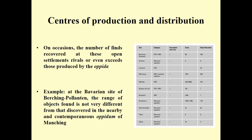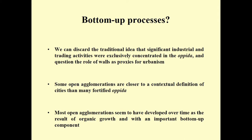If we compare open agglomerations and fortified Opida, we see that on occasions the number of finds recovered at the open settlement even exceeds the finds from some prominent Opida. This is shown in a table published by Vladimir Salaj. The range of activities happening at these sites are often very similar — for example, comparing Berching-Pollanten and the nearby Oppidum of Manching. Several scholars, and I support this idea, have emphasized that we need to discard the traditional idea that important economic activities were concentrated in fortified sites. We should also question the role of walls or fortifications as proxies for urbanism.